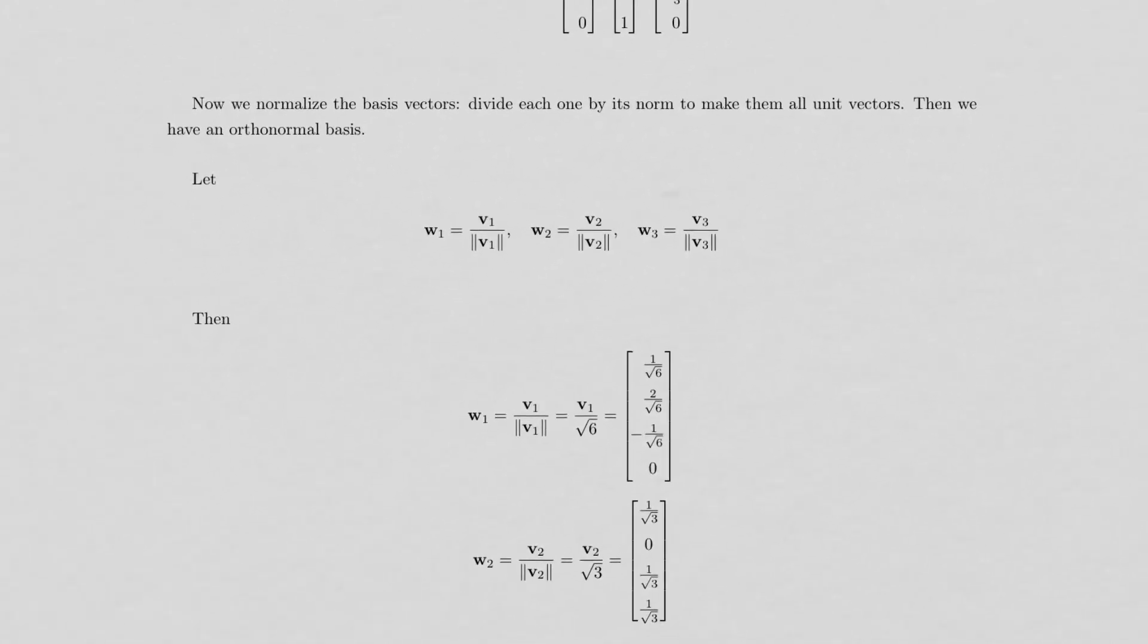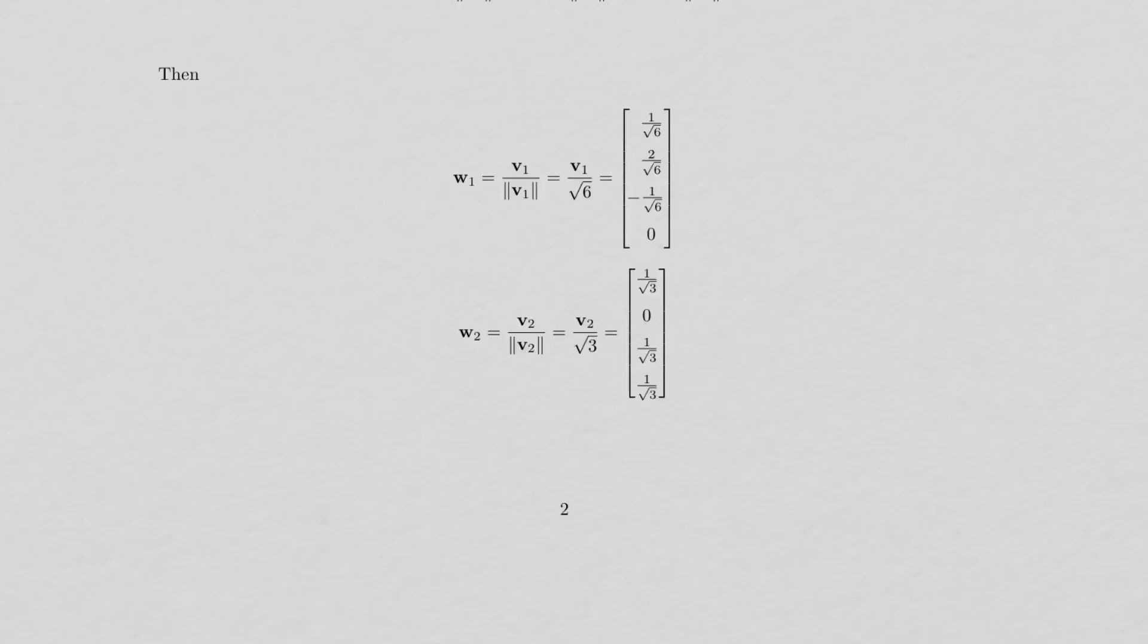We just normalize each of these vectors. So I'll call w1, v1 divided by its norm. Likewise for w2 and w3. Again you can go back, rewind the video, and look at those calculations. You can see the norm of v1 and the norm of v2 root 6 and root 3 respectively.